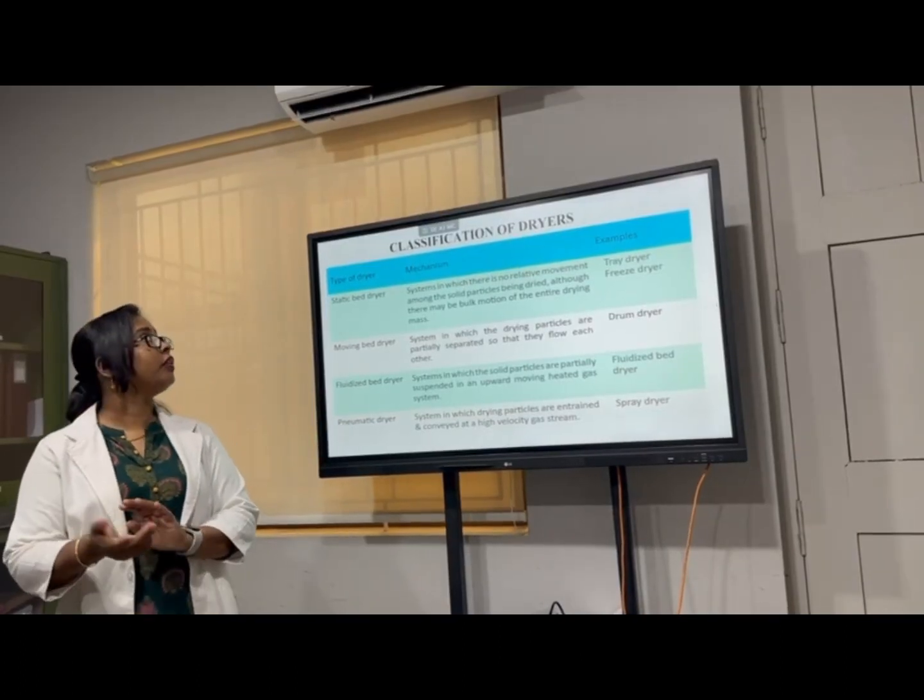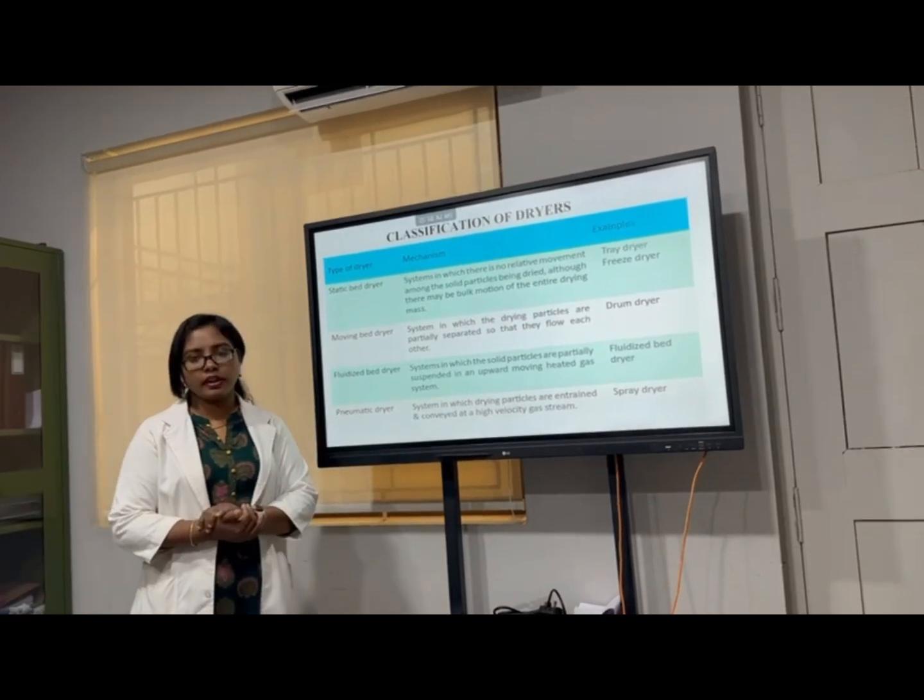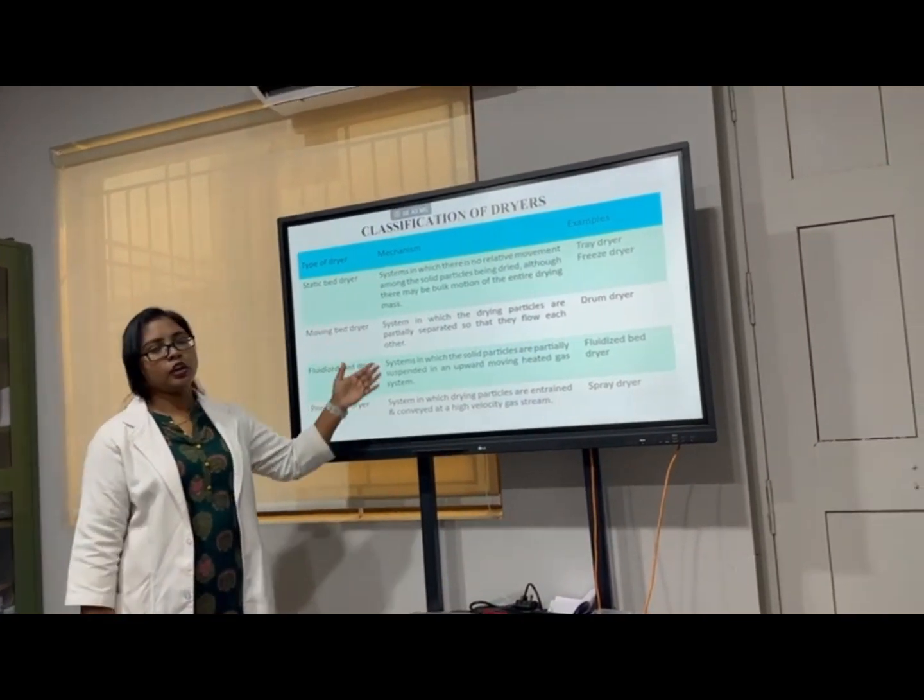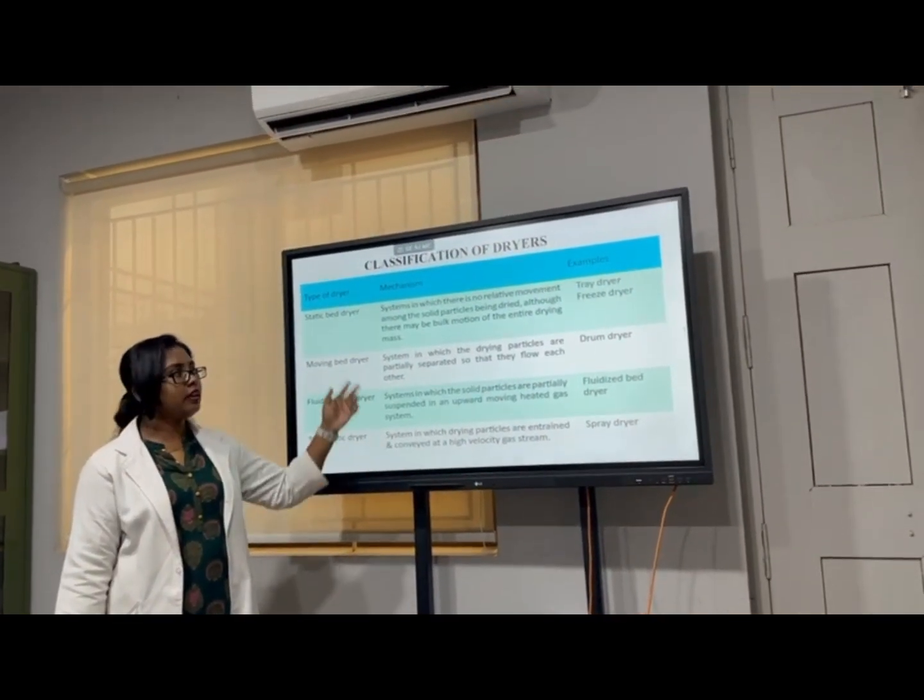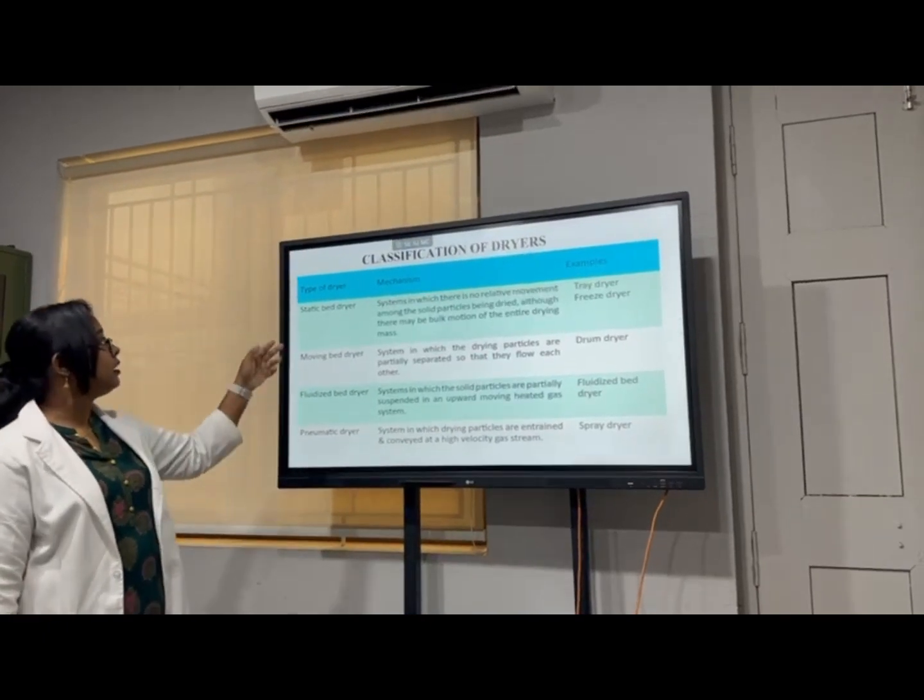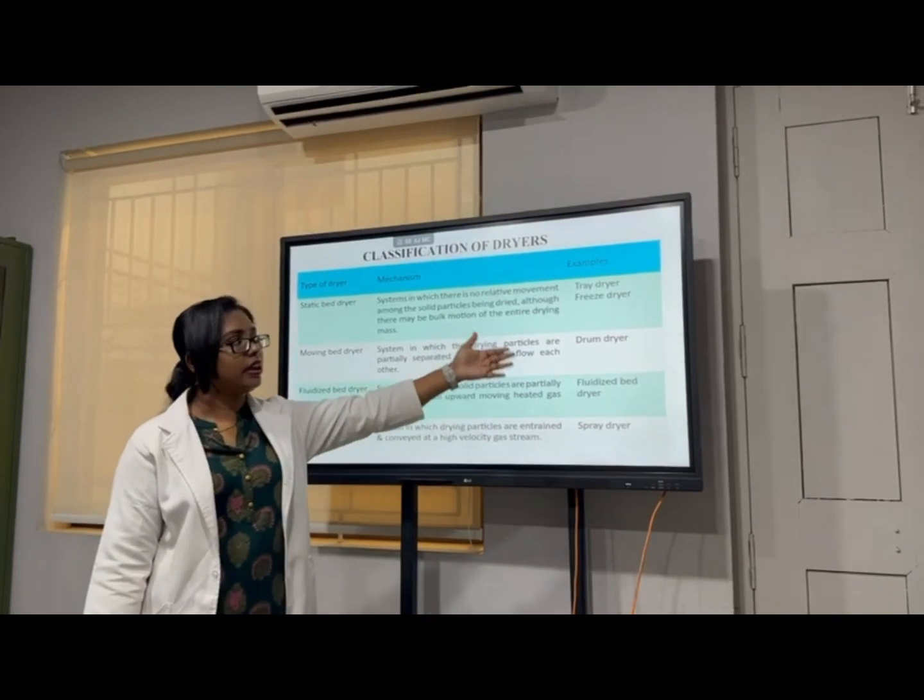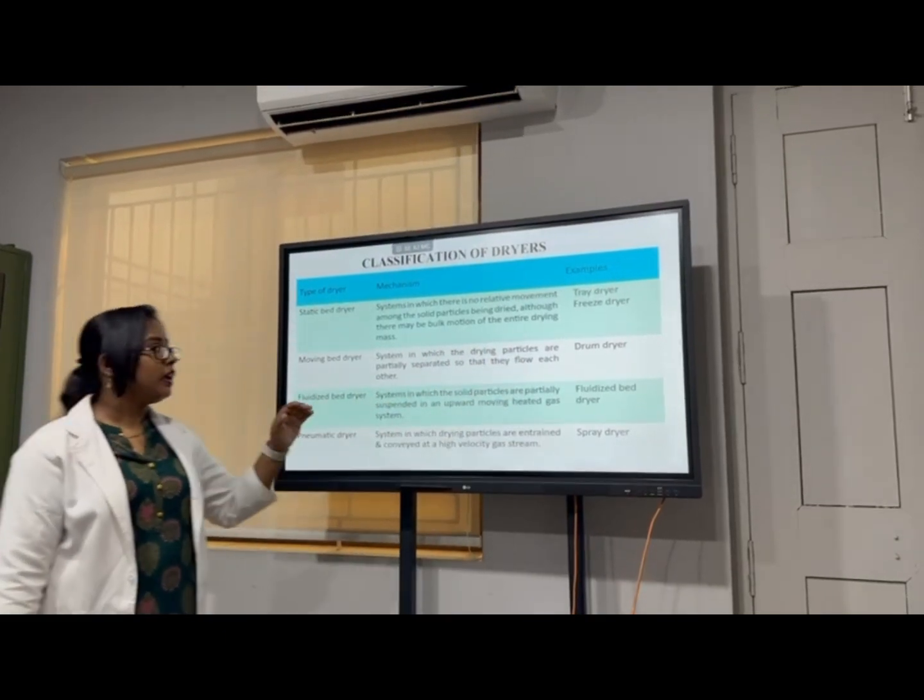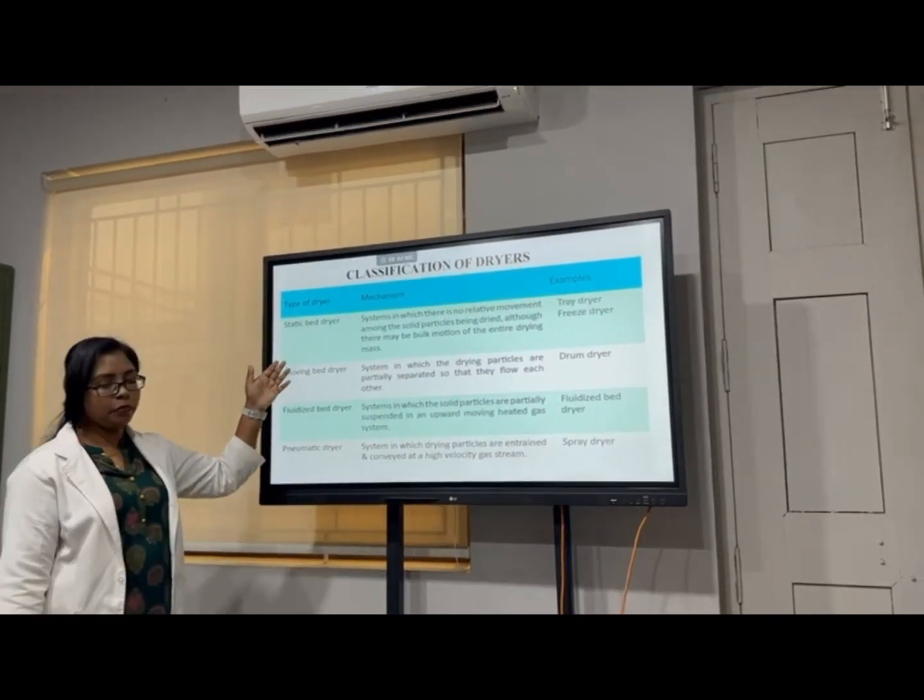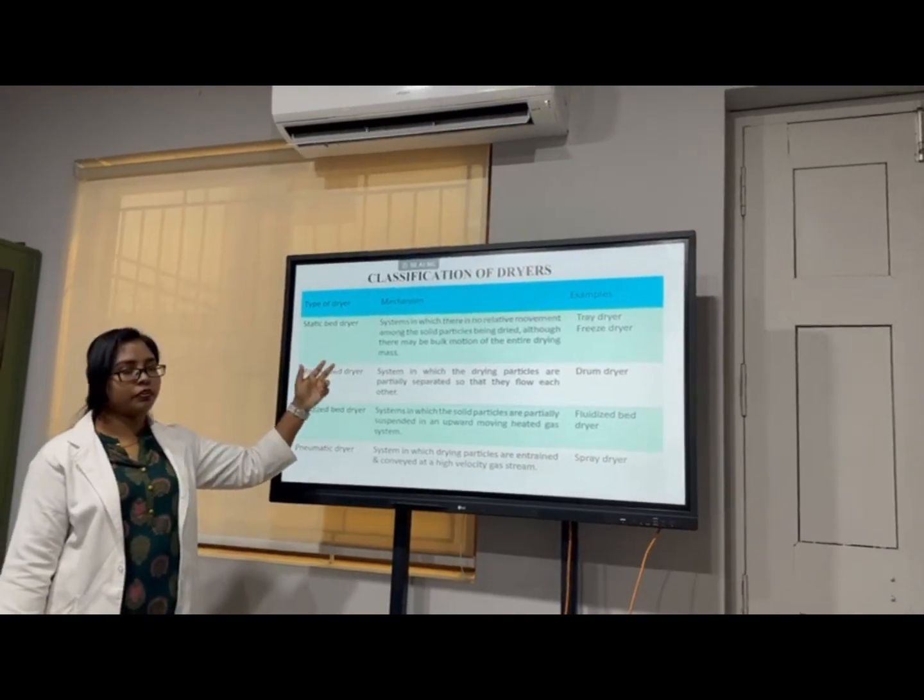We go for the classification of dryers. Here so many equipments is used for the drying process. Here the type of dryer, the mechanism of drying and the examples of the dryers. Here first type of dryer is static bed dryer.